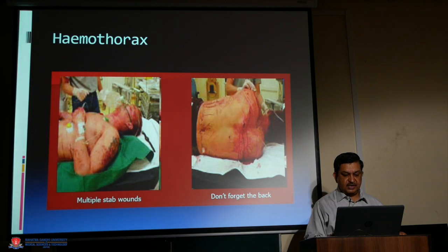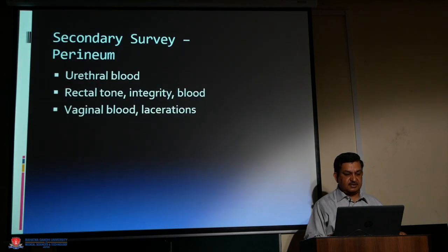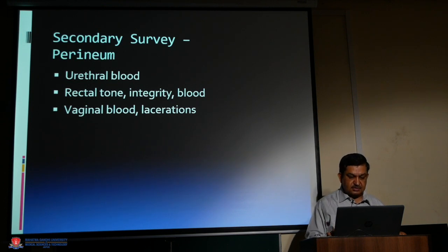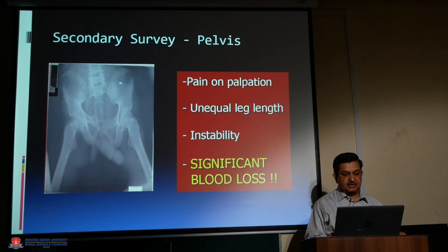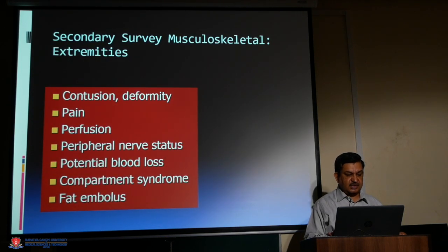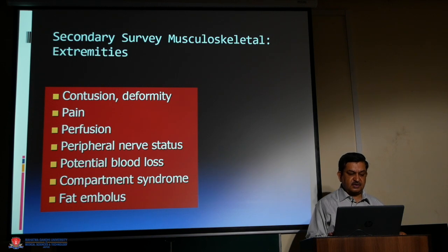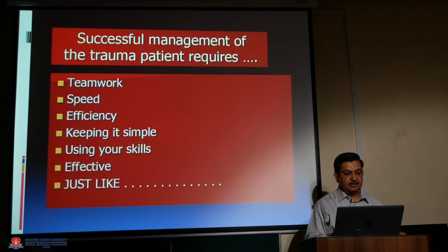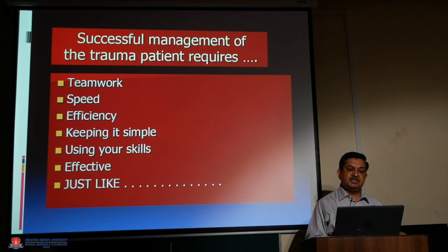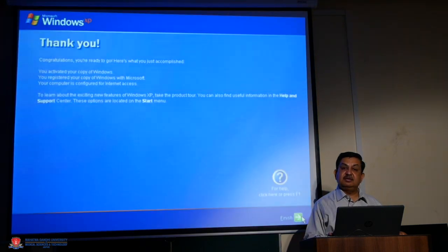Secondary survey of the perineum includes checking for urethral blood, rectal tone and integrity, and vaginal blood or lacerations. Don't forget to check the back. Pelvis assessment looks for pain on palpation, unequal leg length, instability, and significant blood loss. Musculoskeletal assessment covers contusions, deformity, pain, perfusion, peripheral nerve status, potential blood loss, compartment syndrome, and fat embolism. Successful management of the trauma patient requires teamwork, speed, efficiency, simplicity, and effective use of skills.